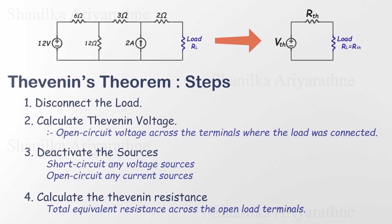Step one: Disconnect the load. We need to isolate the circuit. Step two: Find the Thevenin voltage using Ohm's and Kirchhoff's laws. This is the open circuit voltage across the load terminals. Step three: Deactivate all sources. Short voltage sources and open current sources. Step four: Calculate the Thevenin resistance across the open terminals. That's your RTH. Keep these steps in mind.